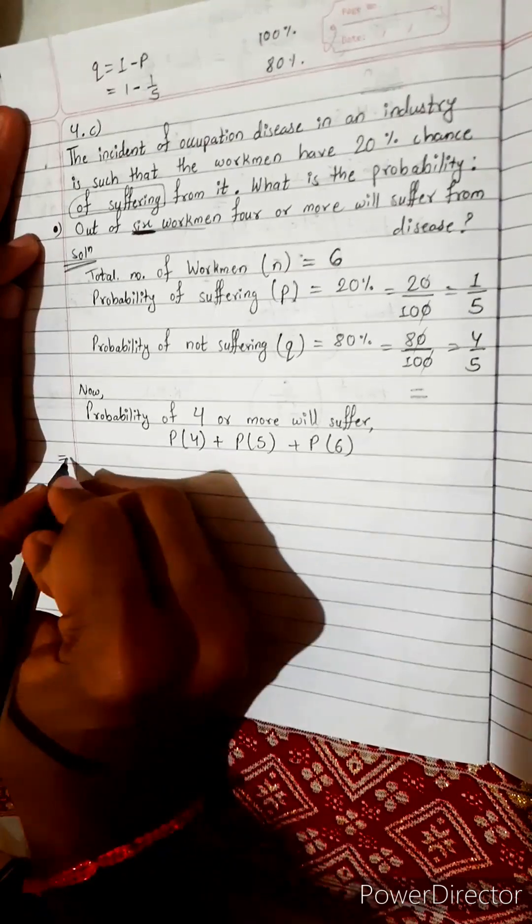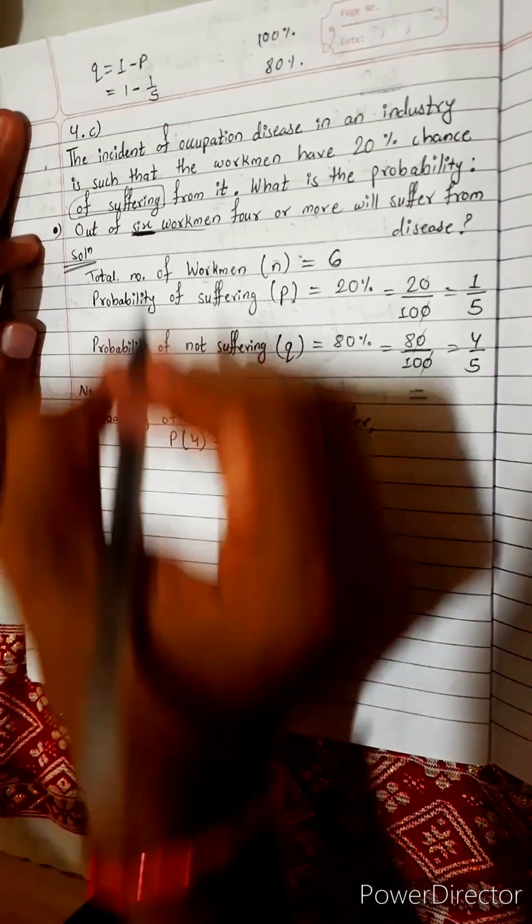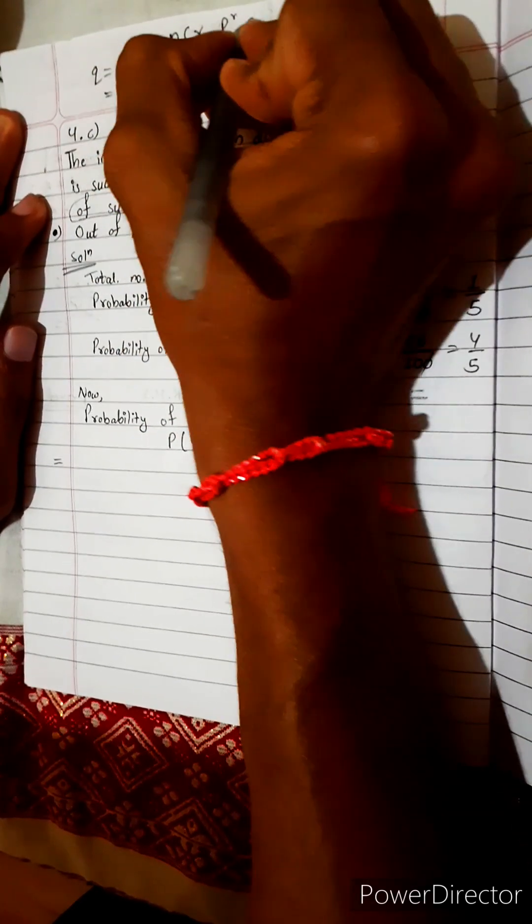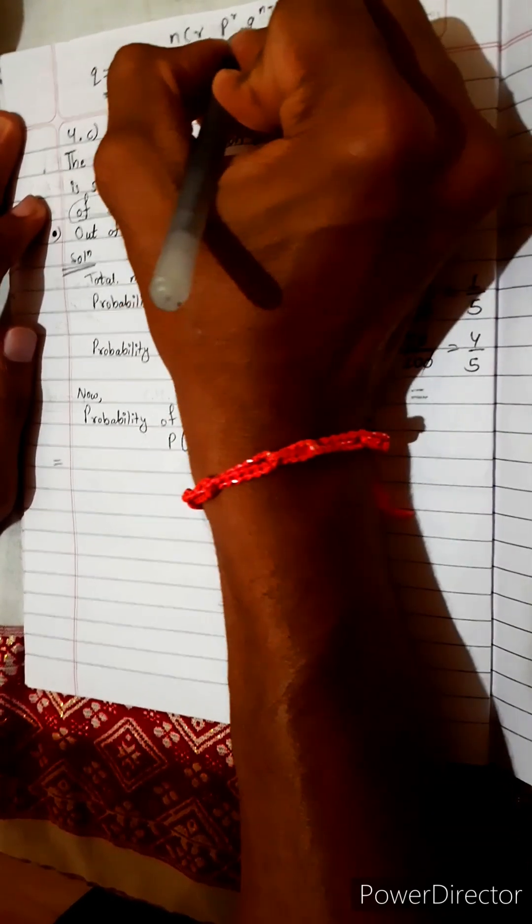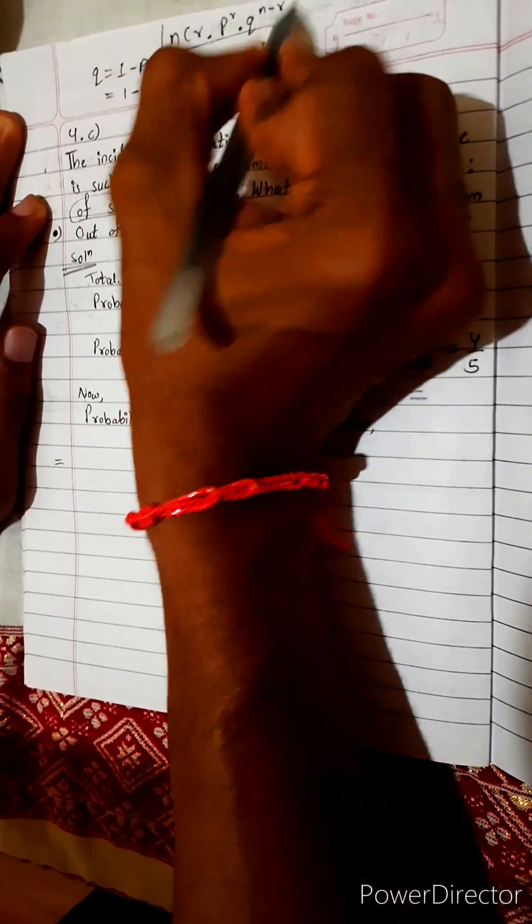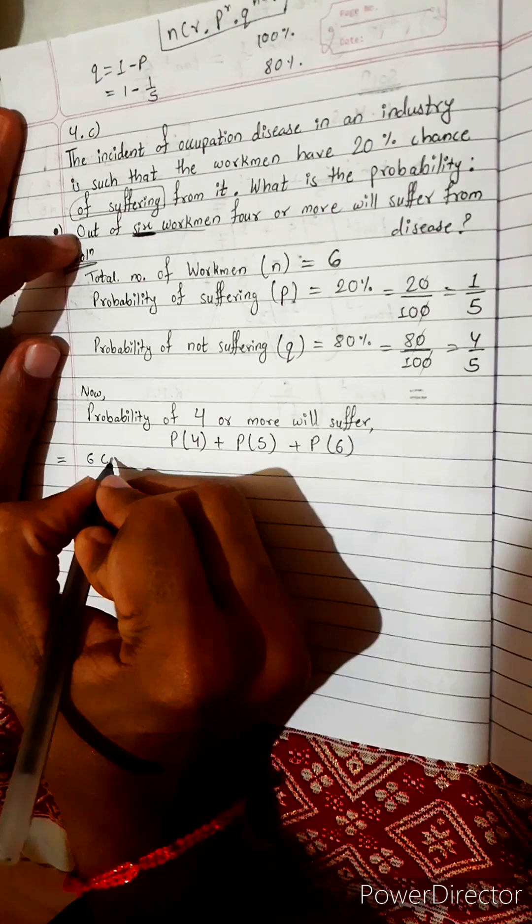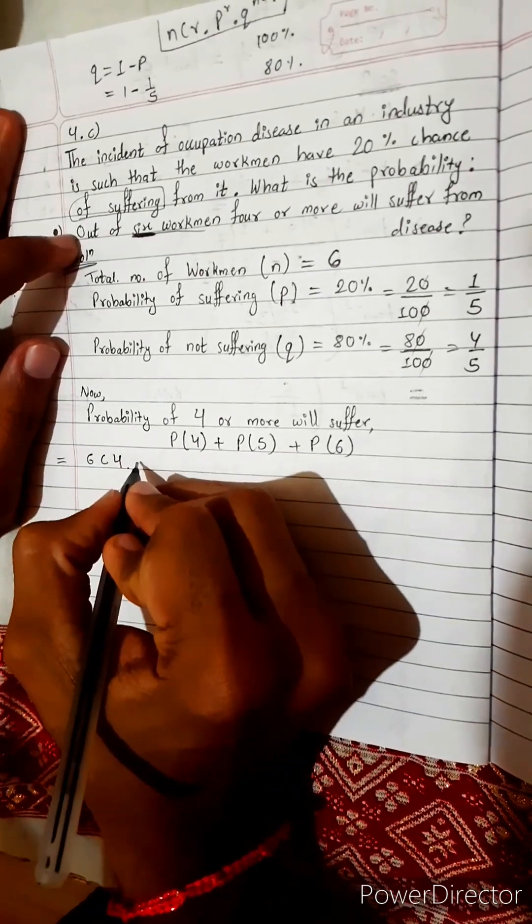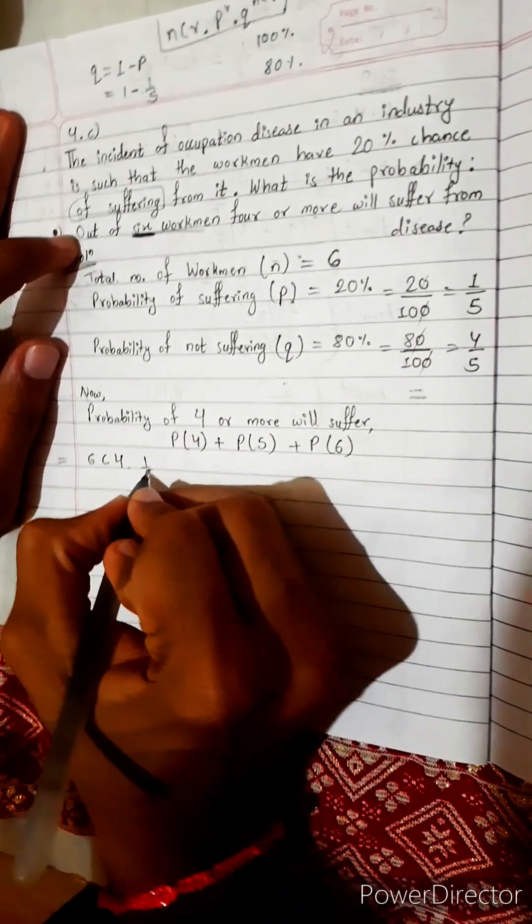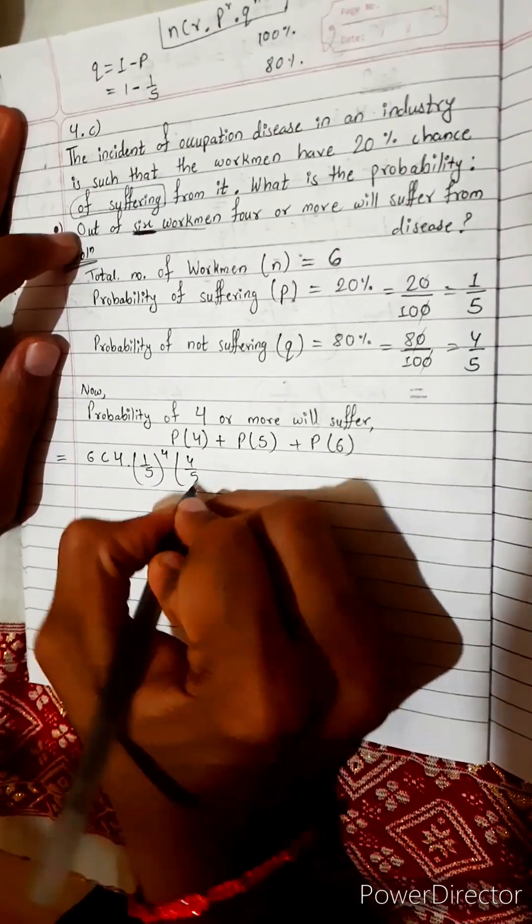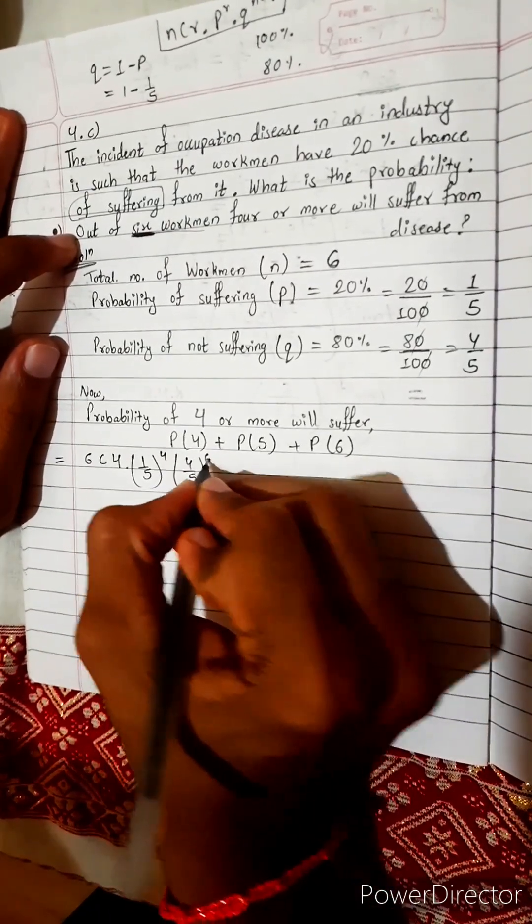Now let's use the formula. Formula is not so difficult. nCr multiply with p to the power r, multiply with q to the power n minus r. All 3 will multiply together. N means 6, so 6C4 multiplies with p is 1 by 5, 1 by 5 power r, and 4 by 5 power n minus r means 6 minus 4.